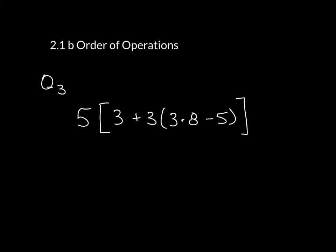Now with this, we're still going to follow the same parentheses, exponents, multiplication, division as it occurs from left to right, addition and subtraction as it occurs from left to right. The first thing that we want to do inside here is the inside brackets, which means we are going to multiply 3 times 8 together and then minus 5.